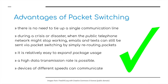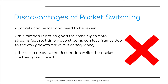There are advantages and disadvantages to packet switching. The advantages include: there is no need to tie up a single communication line. During a crisis or disaster, when the public telephone network might stop working, emails and texts can still be sent via packet switching by simply rerouting packets. It is relatively easy to expand packet usage, a high data transmission rate is possible, and devices of different speeds can communicate. The disadvantages include: packets can be lost and need to be re-sent. This method is not so good for some types of data streams — for example, real-time video streaming — where packets can be received out of sequence and we can lose some frames, especially with live video transmission. There is also a delay at the destination whilst the packets are being re-ordered.